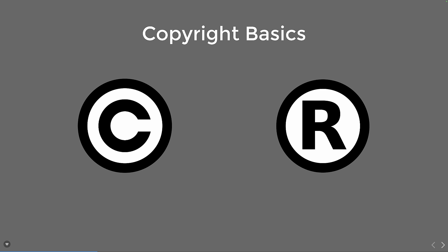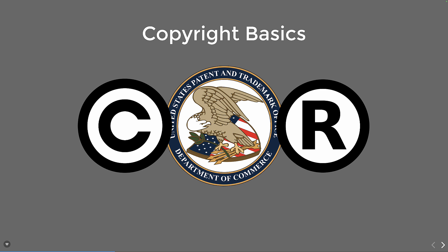Trademark protects symbols, names, and slogans used to identify goods or services and to distinguish them from others, preventing consumer confusion about the source of products. Trademarks can be registered with the U.S. Patent and Trademark Office and can last indefinitely if renewed. Patent protects new inventions or discoveries, granting the inventor exclusive rights to use, make, and sell the invention — usually for 20 years from the filing date. Patents cover inventions that are novel, useful, and non-obvious. We're not going into patents or trademarks further — just knowing how they differ from copyright is the key point.